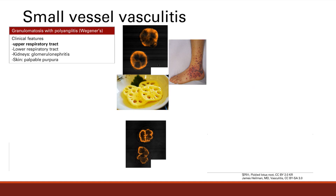Now for small vessel vasculitis. The first disease is granulomatosis with polyangiitis, formerly called Wegener's. There is involvement of the upper respiratory tract, lower respiratory tract, kidneys, and skin. Upper respiratory tract involvement includes nasal septal perforation, chronic sinusitis, and otitis media, which is a key differentiating feature. Lower respiratory tract involvement causes coughing up blood, cough, and shortness of breath. Kidney involvement causes hematuria, red cell casts, and glomerulonephritis.